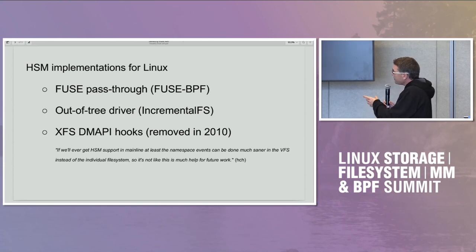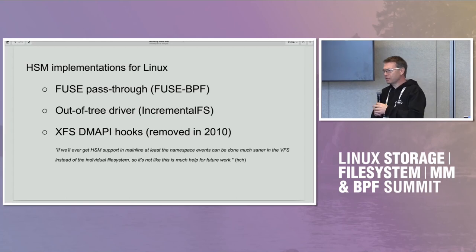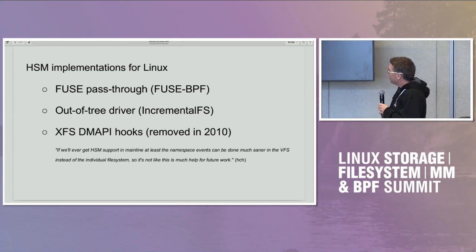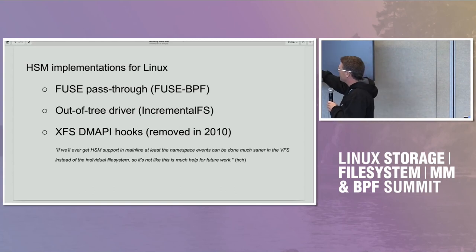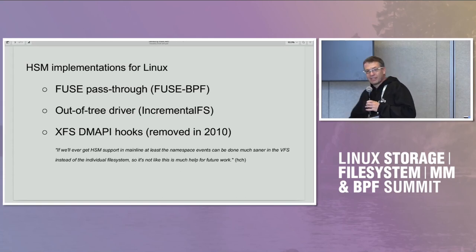DMAPI is an API that Unix systems used to have. Linux only had it in XFS for a while. It's an old API from the tape age — not enough for modern cloud offloading use cases, but remnants exist; for example, punch hole is a remnant of DMAPI. In 2010, the DMAPI hooks and callbacks to user space were removed from XFS with the comment: if we ever get HSM support in mainline, at least the namespace events can be done much easier and saner in the VFS instead of individual file systems. That's what I'm trying to do now.